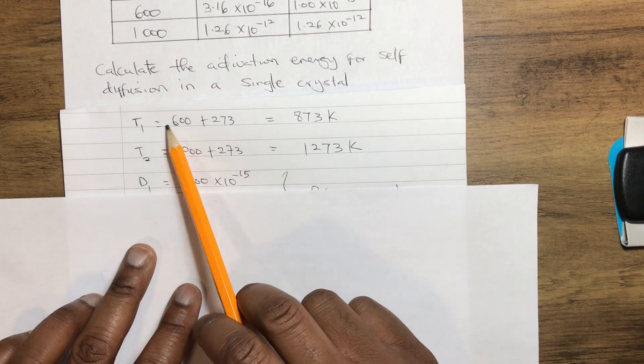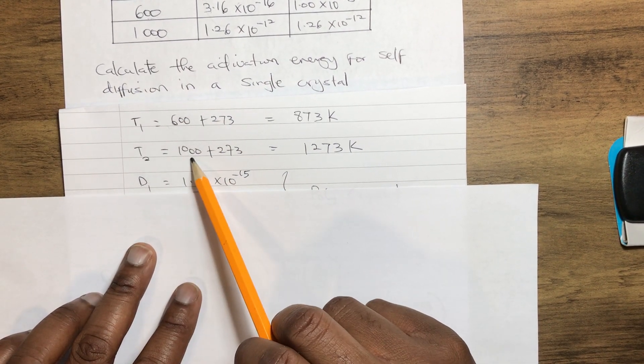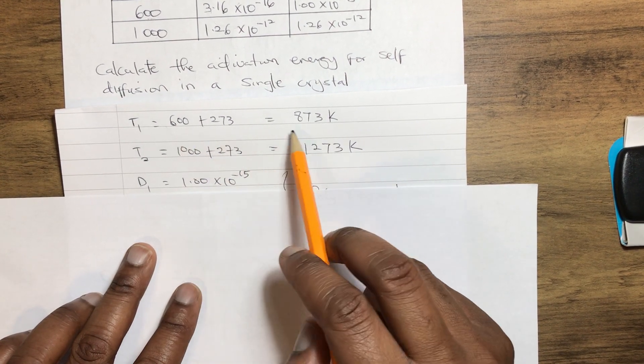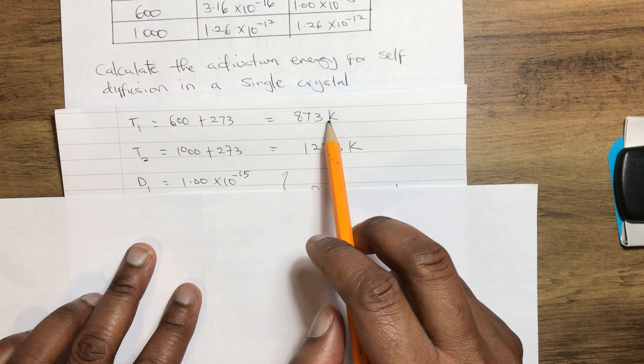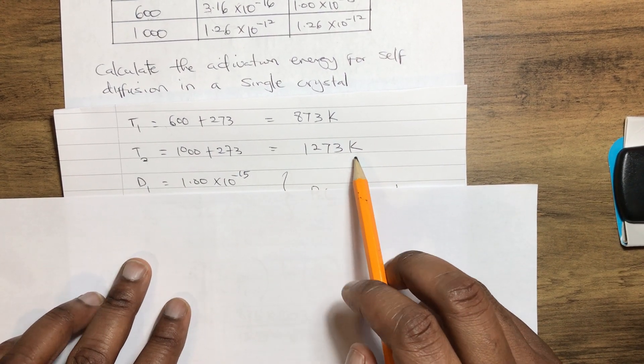Temperature 1 is 600°C, temperature 2 is 1000°C, then we add 273 to convert to Kelvin. T1 gives us 873 Kelvin, T2 gives us 1273 Kelvin.